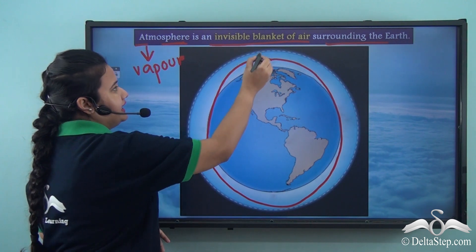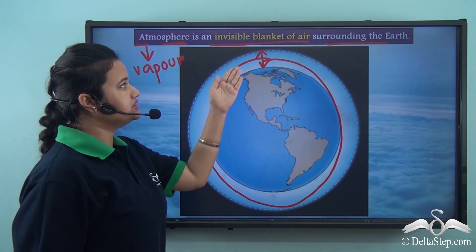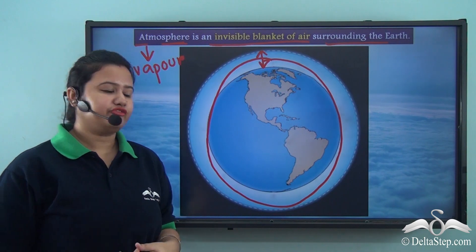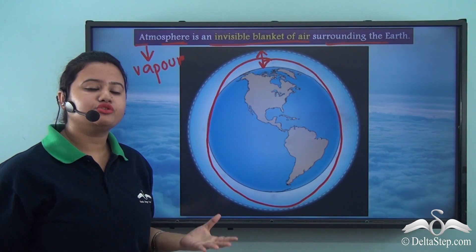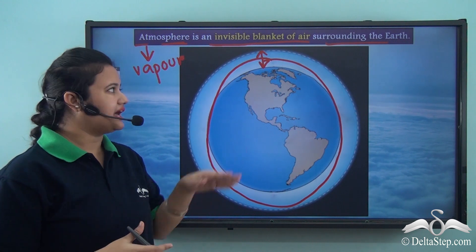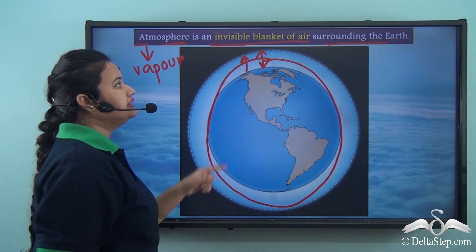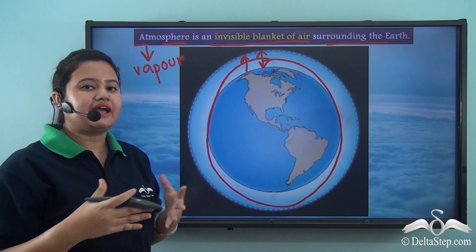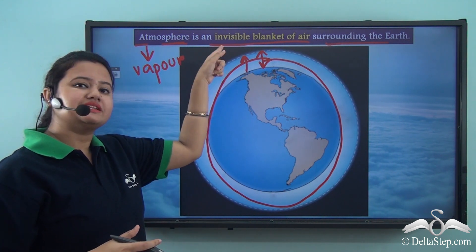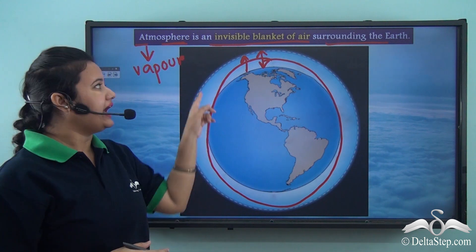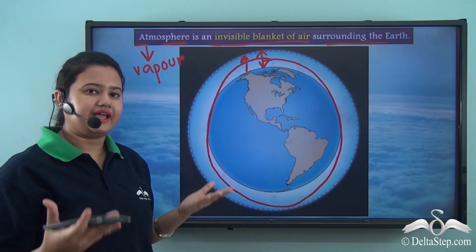This layer extends for several thousand kilometres above the Earth's surface. However, this layer is not uniform throughout. As we go higher and higher, the air becomes thinner and thinner and it gradually fades away or blends with space, and we actually do not know where the atmosphere ends.